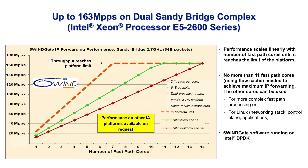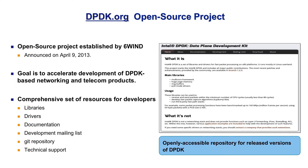In April 2013, with the goal of accelerating the development of networking and telecom products based on DPDK, 6Wind established the dpdk.org open source project. At dpdk.org, engineers can find libraries, documentation, mailing lists, the Git repository, and support relevant to high-performance packet processing using DPDK. Dpdk.org is fully active, and a large number of companies are participating in this open source community.